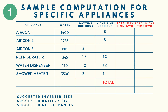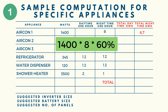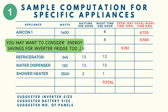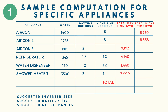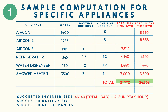Get the total daytime use in kilowatt-hours by multiplying watts by hours of use. For inverter aircons, we assume 40% energy savings, so we multiply watts by daytime hours, then multiply by 60%. Adding daytime and nighttime kilowatt-hours and dividing by 4 (sun peak hours): 46,140 divided by 4 equals 11,535 watts — this gives us our inverter/panel requirement.